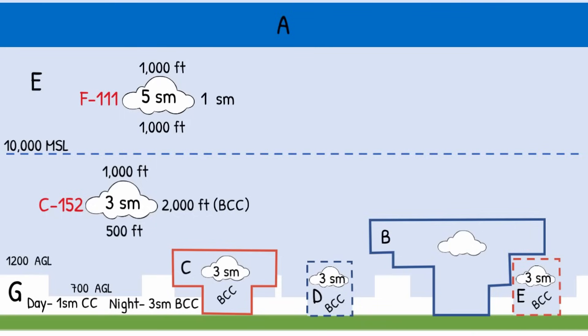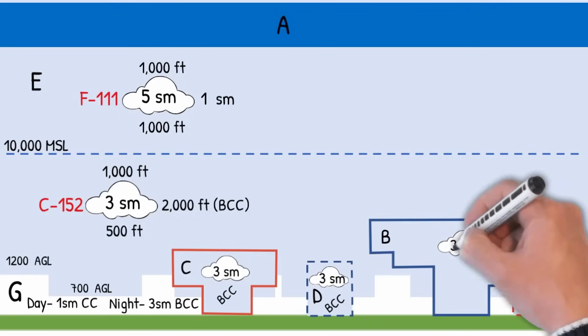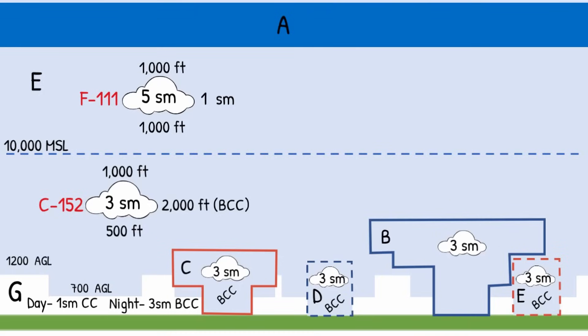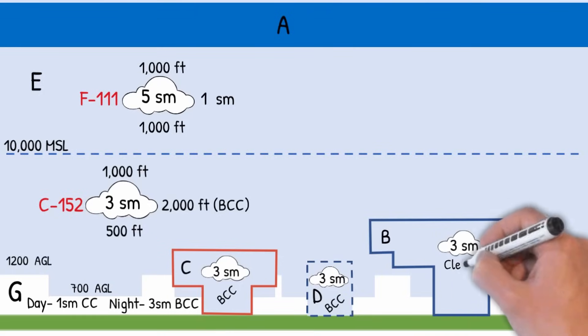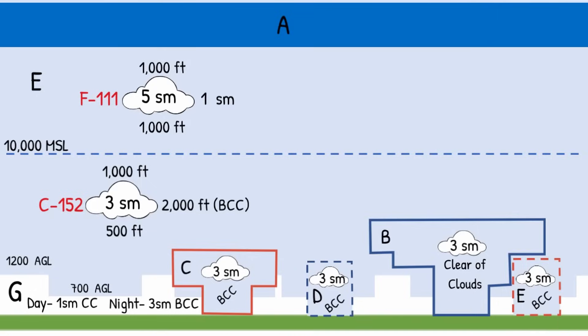What do you think the visibility and cloud clearance requirement is in Class B airspace? Well, here's the exception. It's still three statute miles, but it's clear of clouds. In other words, you can be a foot outside the cloud and meet the requirements for Class B airspace. The reason for this is because to enter Class B airspace, you have to have a clearance, they'll tell you to maintain VFR, and you have a transponder with ADS-B. They will know exactly where you are to keep you clear of IFR traffic and to give you traffic advisories. In controlled airspace below 10,000 feet MSL, it's Cessna 152 — three miles visibility and basic cloud clearance — with the exception of Class B airspace, which is clear of clouds. In Class G airspace at night, it reverts to the same requirements.